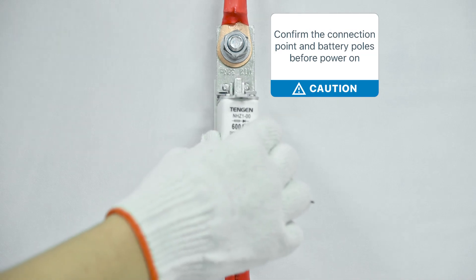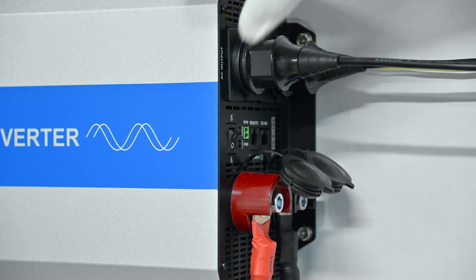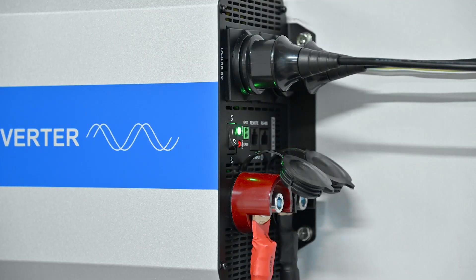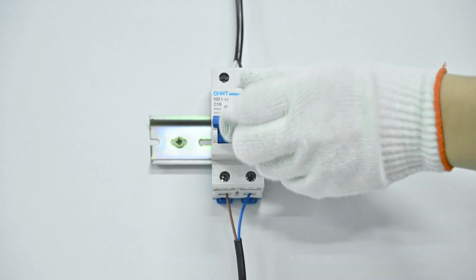First, we install the fuse. Then, turn on the inverter. At last, turn on the load switch.